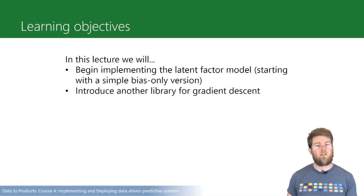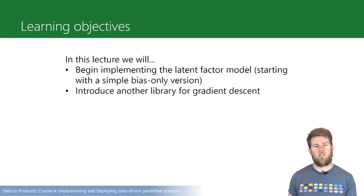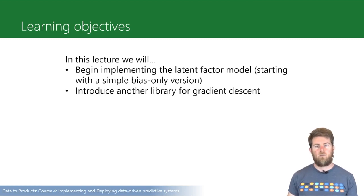In this lecture we're going to start trying to implement a more complex model, a latent factor model in Python. To begin with we'll just do so using a simple bias-only version of the model — the model which takes just an offset, a user bias, and an item bias in order to make a prediction. We'll also show how we can use a library function for gradient descent to make this a little bit easier. This is going to be a fairly challenging lecture showing how we can convert mathematical code for our derivatives into Python code, which turns out is a fairly difficult thing to get right.